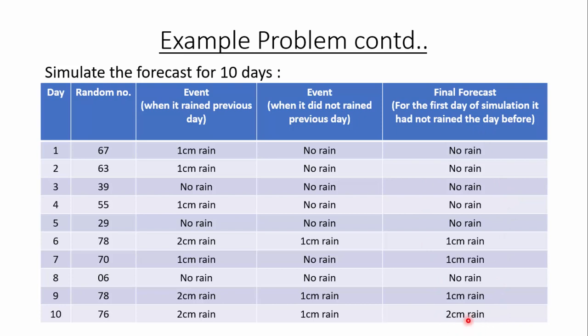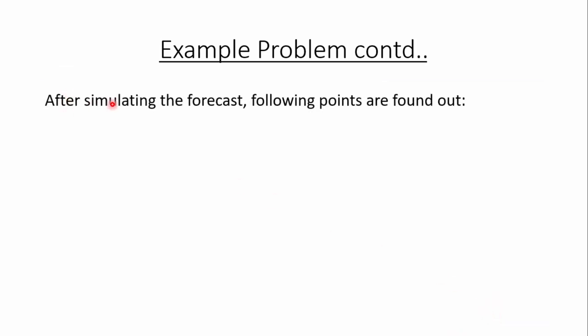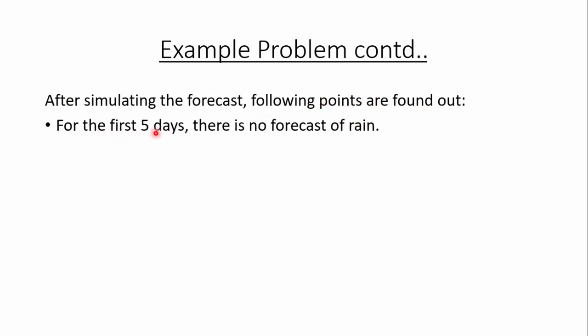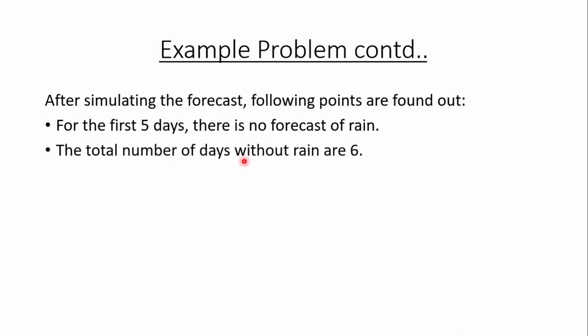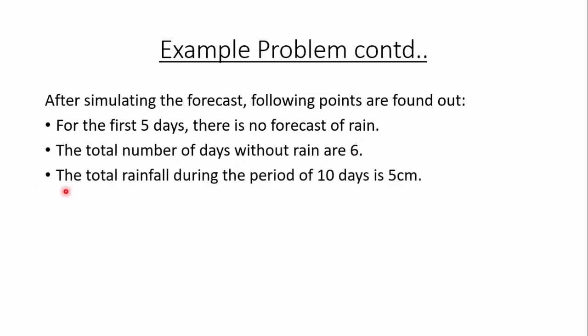After simulating the forecast, the following outcomes are found: for the first 5 days there is no forecast of rain. The total number of days without rain is 6. The total rainfall during the 10-day period is 5 cm, and the maximum rainfall on any single day is 2 cm.